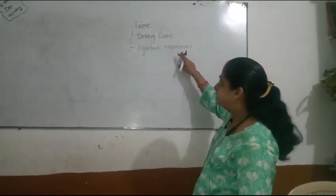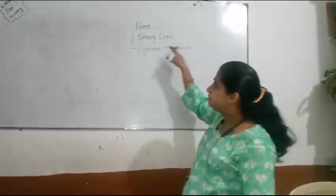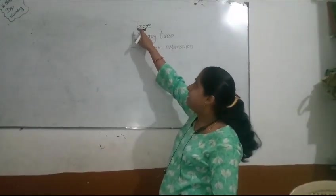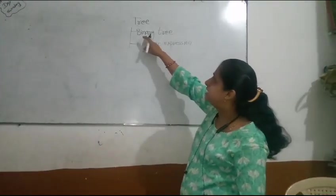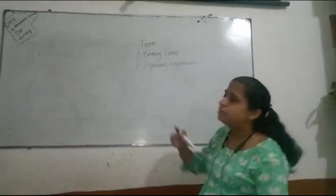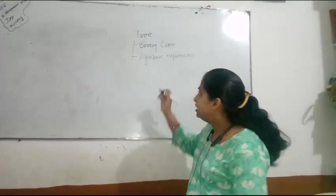From where does this algebraic expression point come? This point comes from the tree. Tree is a non-linear data structure. We also have binary tree, which is part of the tree data structure.